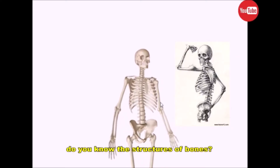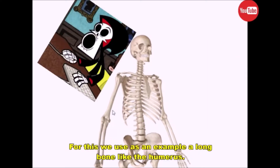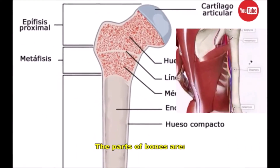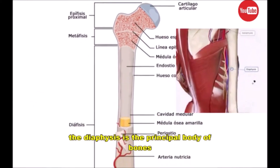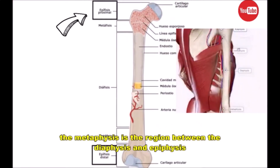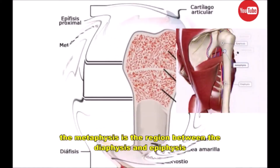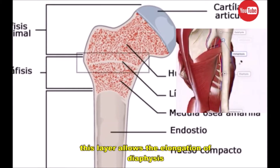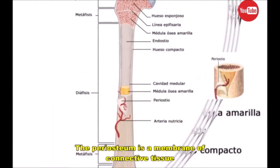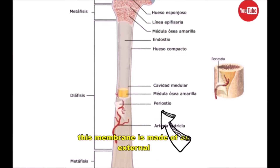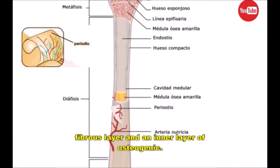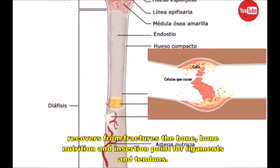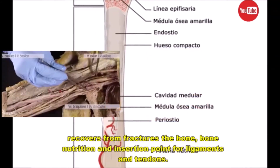Do you know the structure of bones? What are parts of bones? For this, we use as an example a long bone like the humerus. The parts of bone are: the diaphyse is the principal body of bones. The epiphysis are the ends of the bones. The metaphyse is the region between the diaphyse and epiphysis. The metaphyse is as an epiphysis layer — this layer allows the elongation of diaphyse. The pelustium is a member of connective tissue, made of an external fibrous layer and inner layer of osteogenesis. The pelustium protects the bone, recovered from fractures the bone, bone nutrition, and insertion point for ligaments and tendons.